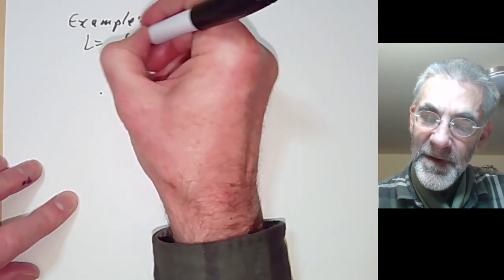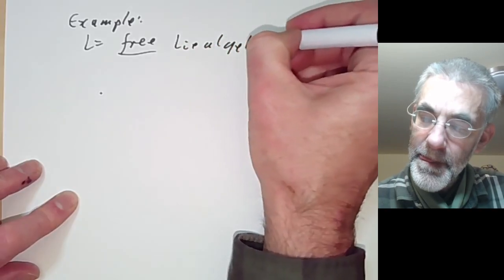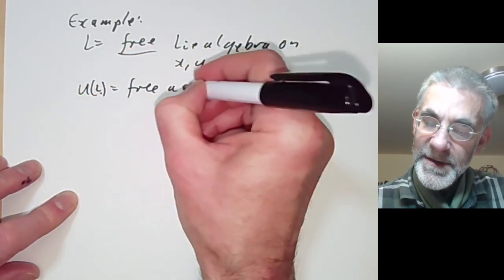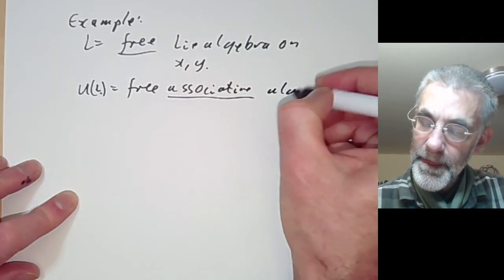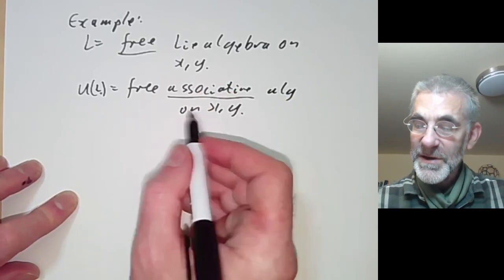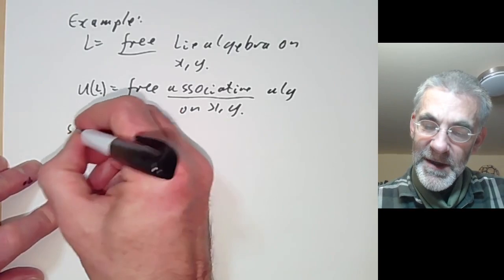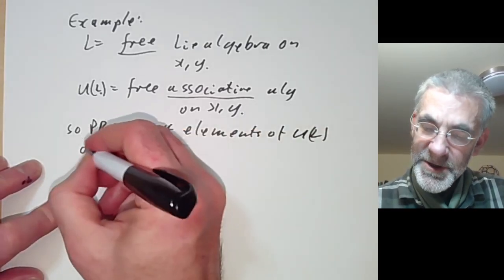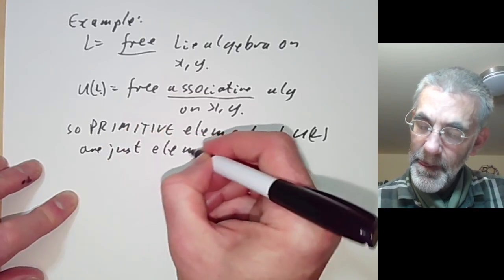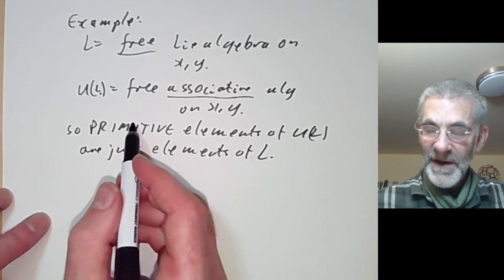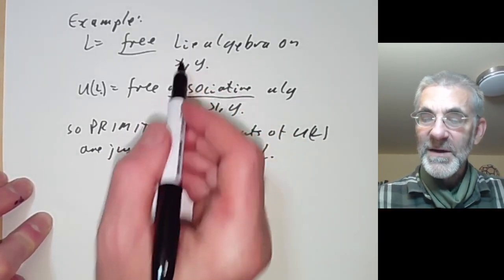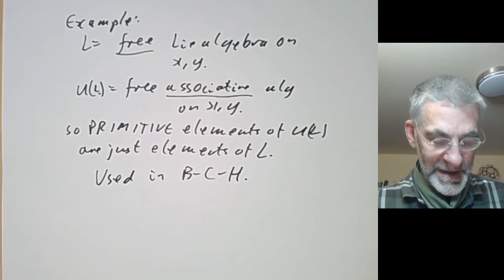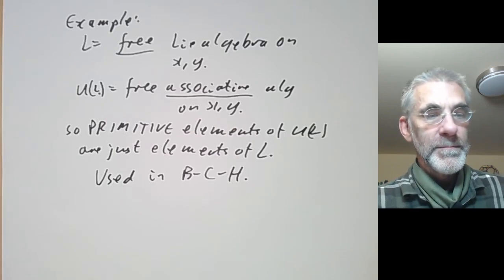As an application, we can now prove the result used in the previous lecture. Take L to be the free Lie algebra on elements x and y. Then U(L) is just the free associative algebra on x and y — all non-commutative polynomials in x and y. So the primitive elements of U(L) are exactly the elements of the Lie algebra L: that is, any primitive element in the free associative algebra can be written in terms of x and y using the Lie bracket. This was the result used in the proof of the Baker-Campbell-Hausdorff formula in the previous lecture.